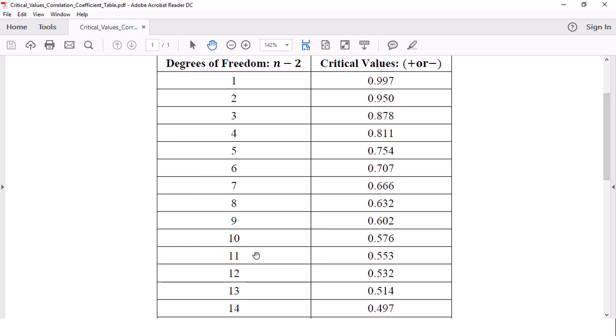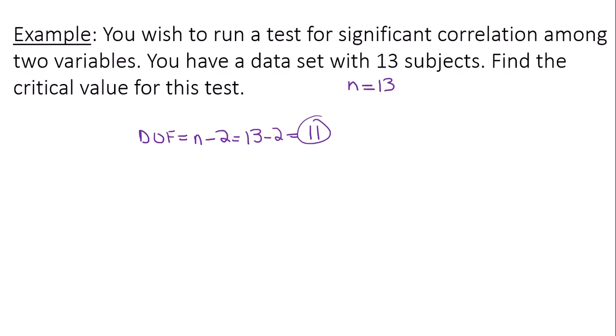11 degrees of freedom give us 0.553, so your critical value is 0.553. So there's an example on how to find a critical value for a linear correlation test. Thanks for watching.